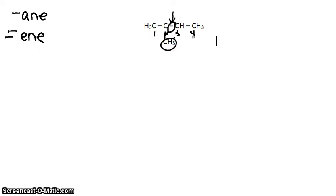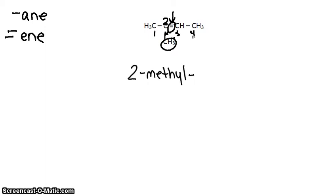We also have to state where this double bond is. From our previous video, we know how to name methyl groups. So we number the chain: 1, 2, 3, 4 — the methyl is on carbon number 2, so we write 2-methyl. And the double bond is also on carbon number 2, so it ends in '-ene'. So that compound is called 2-methyl-2-butene.